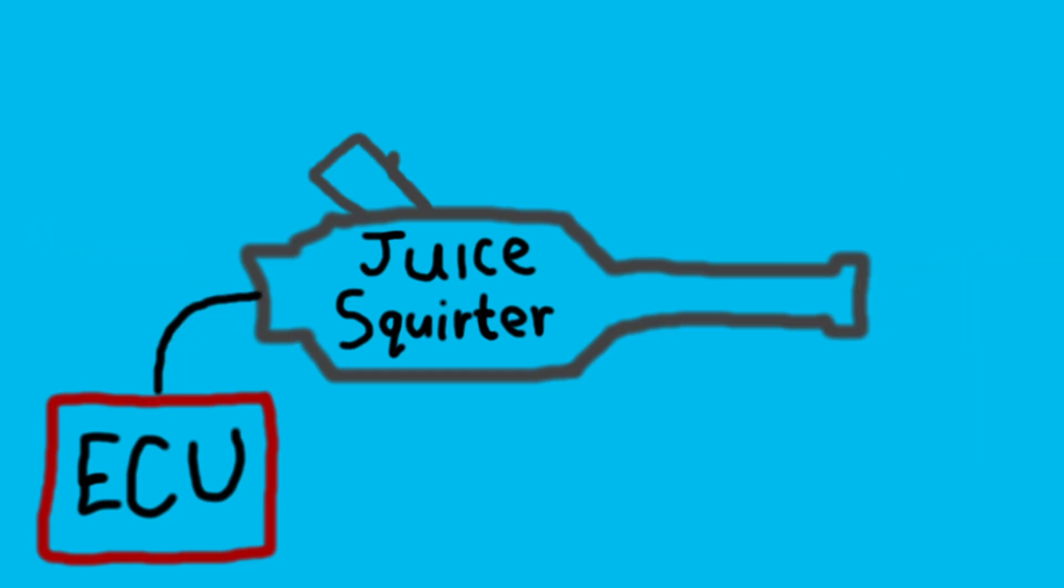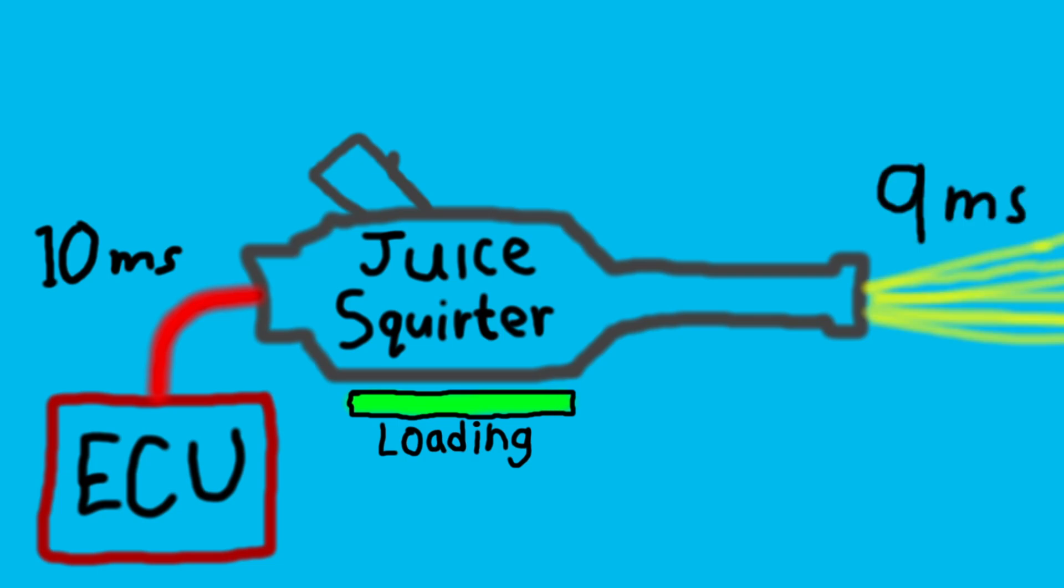Unfortunately, we do not live in an ideal world, and the injector has physical components that take time to open. So, if the ECU sends a pulse to the injector of 10 milliseconds, the injector might only actually be injecting for 9 milliseconds. This difference between the pulse width sent to the injector and the pulse width that the injector actually injects is known as your dead time.